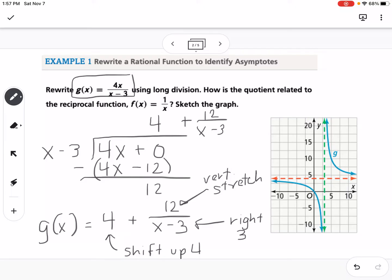When sketching the graph, the 4 and the 3 tell us where our asymptotes are. Our new vertical asymptote is at x equals 3, and our horizontal asymptote is at y equals 4. The vertical stretch stretches out our graph by a factor of 12.